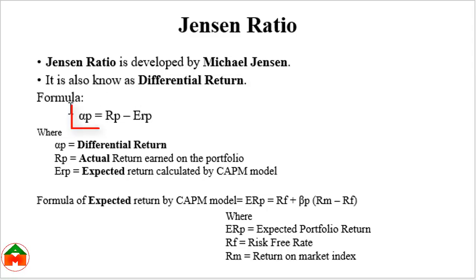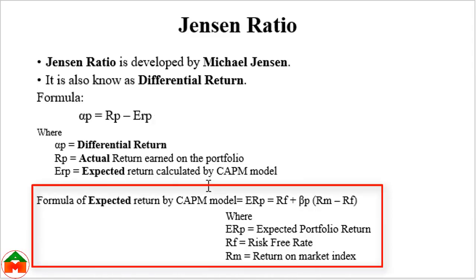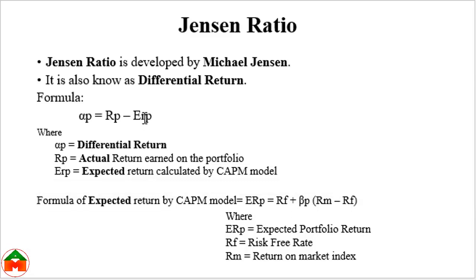The Jensen ratio, developed by Michael Jensen, is also known as the differential return. The formula uses alpha p to indicate the differential return. We calculate it by deducting the expected return of the portfolio (ERP) from the actual return (Rp). To calculate the expected return we use the CAPM model: Rf plus beta p multiplied by (Rm minus Rf), where Rm means market return and Rf means risk-free rate. After getting the expected return from CAPM, we deduct it from the actual return to get the differential return.